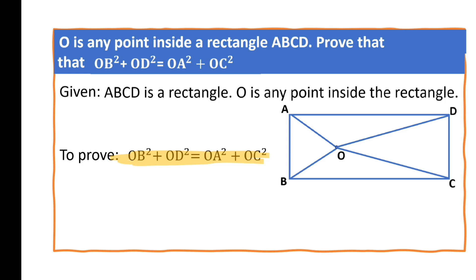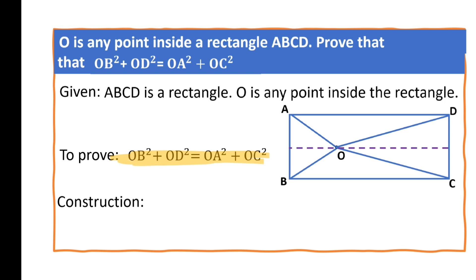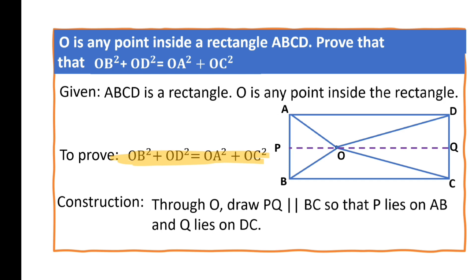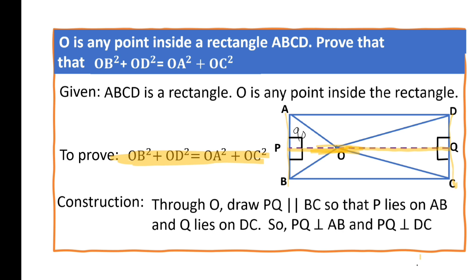Draw a parallel line to AD or BC. You can also draw a parallel line parallel to AB or DC. But now let us retain the line PQ through O. Draw PQ parallel to BC so that P lies on AB and Q lies on DC. Here PQ is perpendicular to AB and also perpendicular to DC, making all four angles 90 degrees.